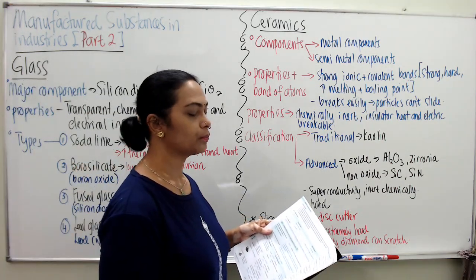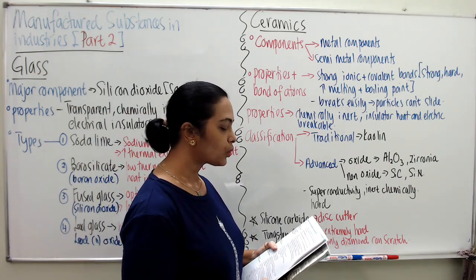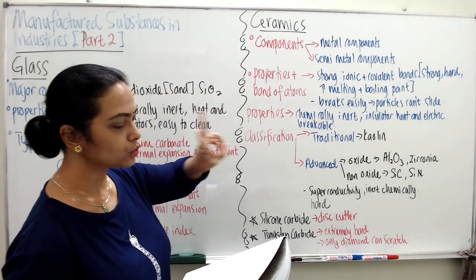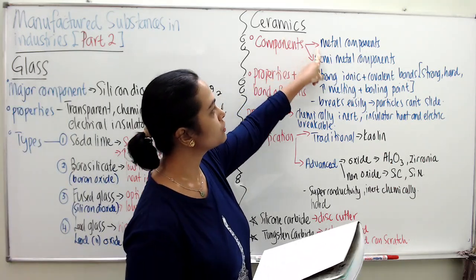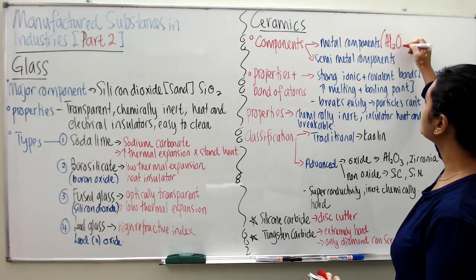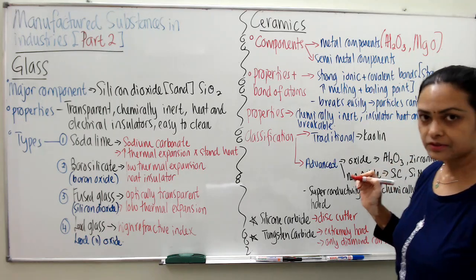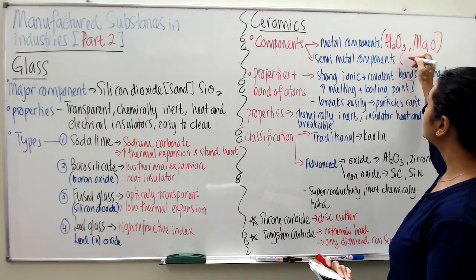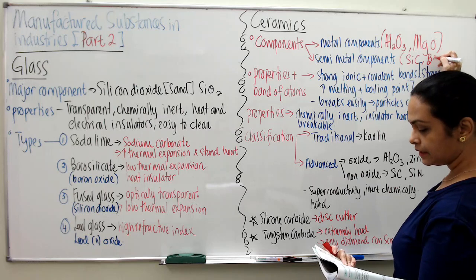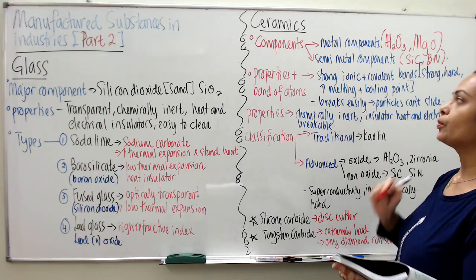The main components of ceramics are metal components such as aluminum oxide (Al₂O₃) and magnesium oxide (MgO), and semi-metal components such as silicon carbide and boron nitride. These are the two categories of components — either one can be present in ceramics.